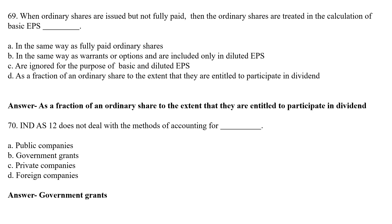MCQ 69: When ordinary shares are issued but not fully paid, the ordinary shares are treated in the calculation of basic EPS — Option A: same as fully paid ordinary shares, Option B: same as warrants included only in diluted EPS, Option C: ignored, Option D: as a fraction of an ordinary share to the extent they are entitled to participate in dividend. The correct answer is Option D.